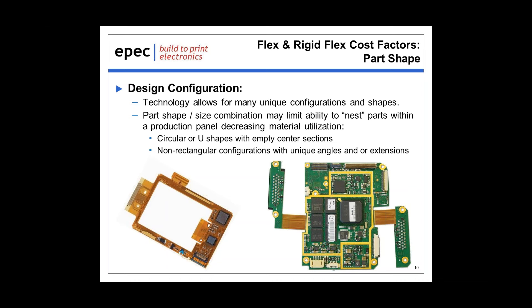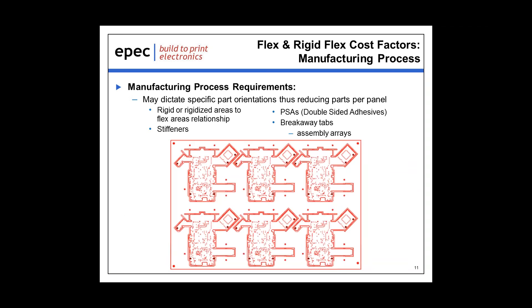From a manufacturing point of view, there are requirements that may impact material utilization and cost. Manufacturing requirements may dictate that parts must be oriented in a certain direction in order to allow for stiffeners to be assembled, PSAs to be attached, and breakaway tabs between adjacent rigid areas in order to create an effective assembly array. The example shown below is a good indication of this, where this design required a specific panel configuration and you can see the extent of unused space between adjacent parts.